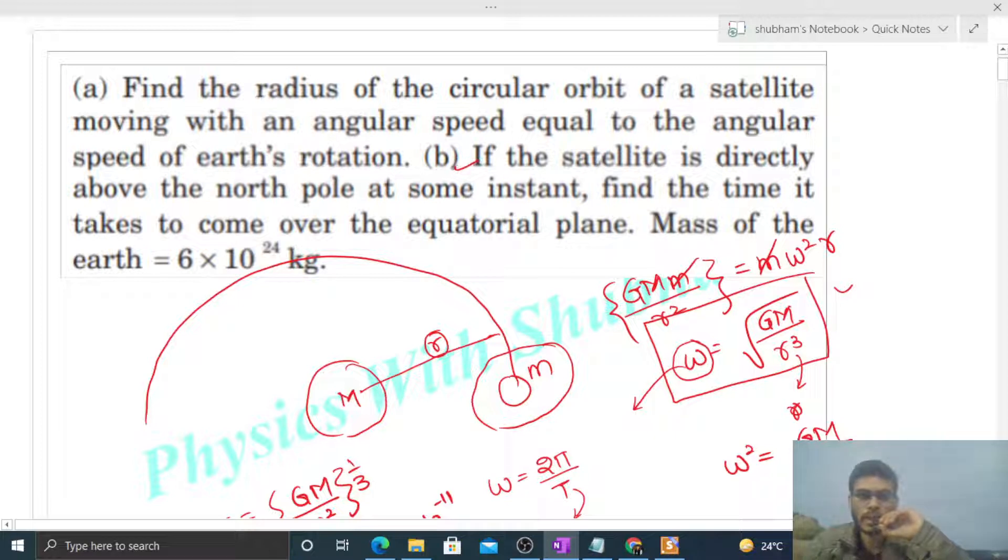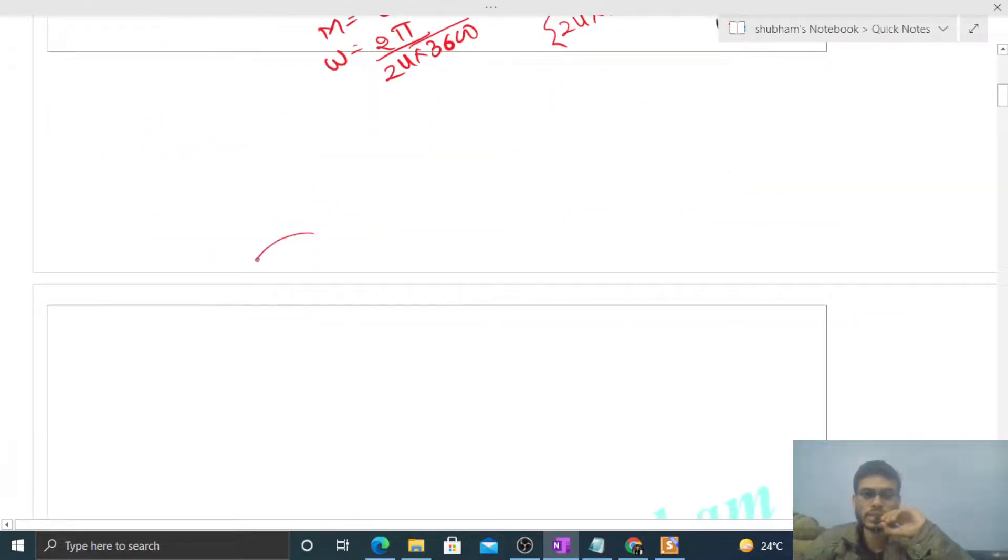Let's check part (b): If the satellite is directly above the north pole at some instant, find the time it takes to come over the equatorial plane. So at some instant our satellite is directly above the north pole, and we have to find the time taken by this satellite to come to the equatorial plane.